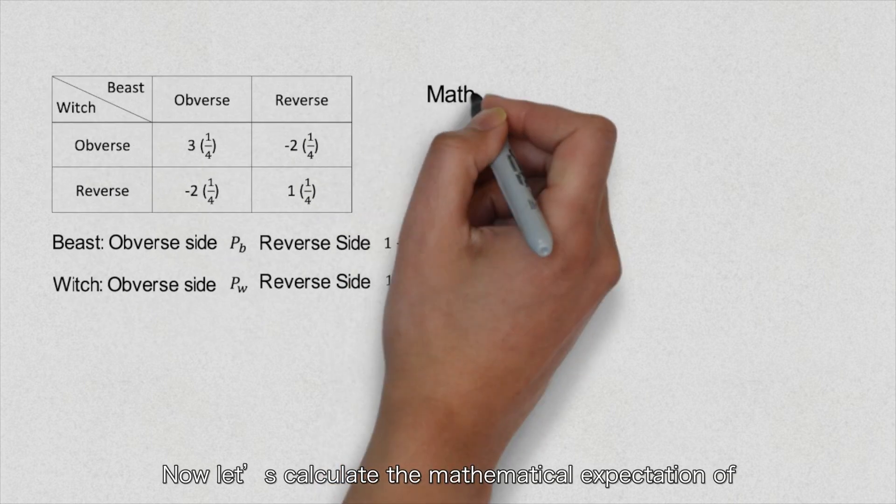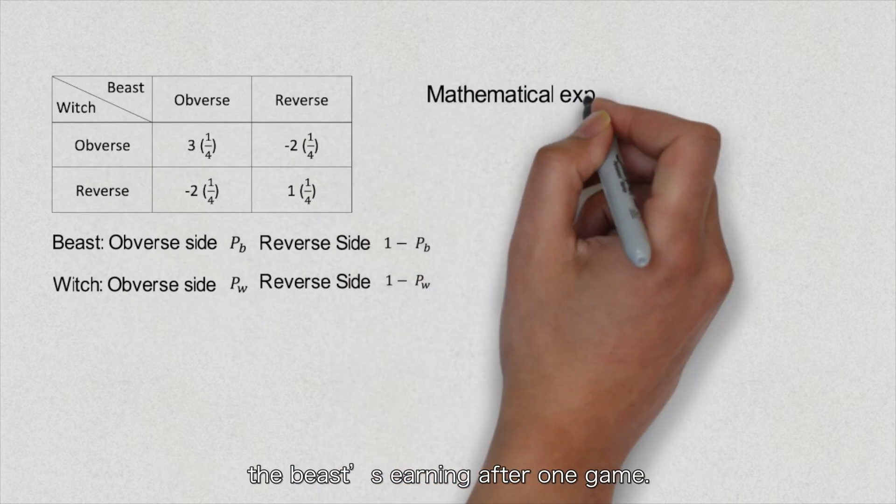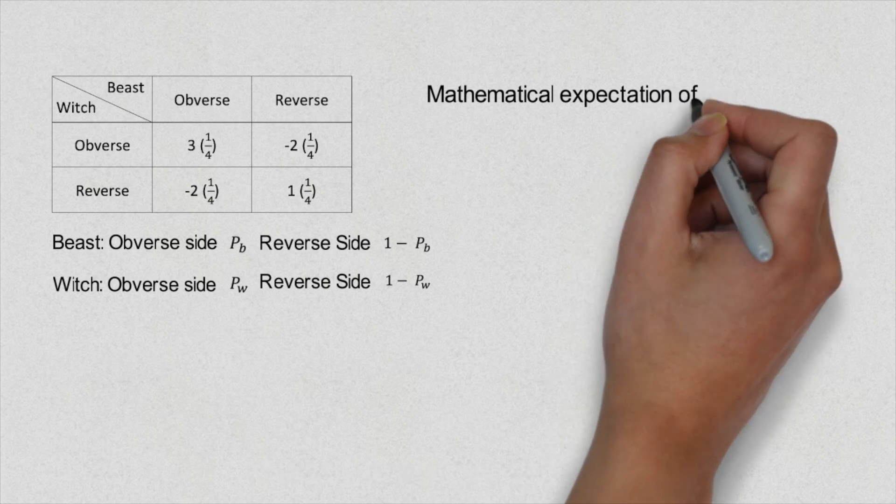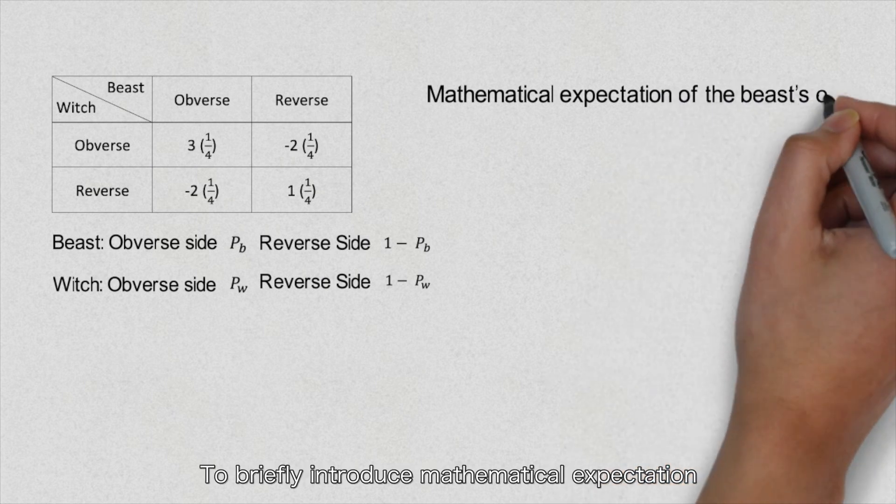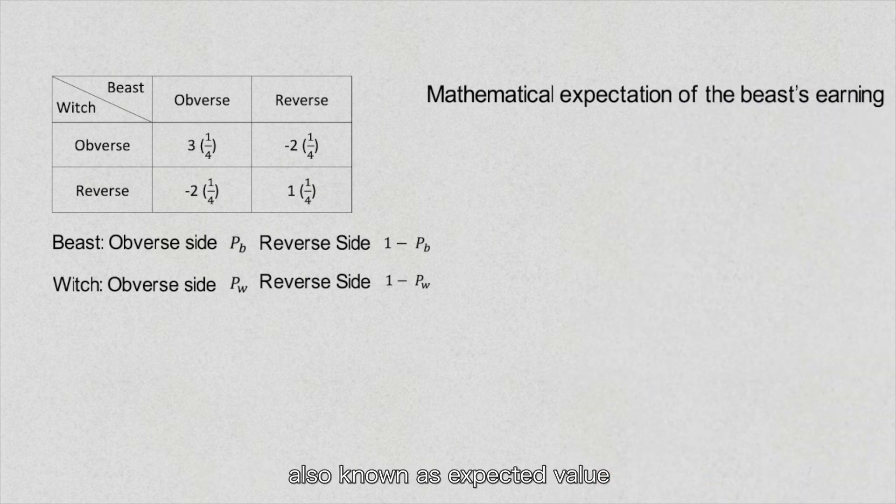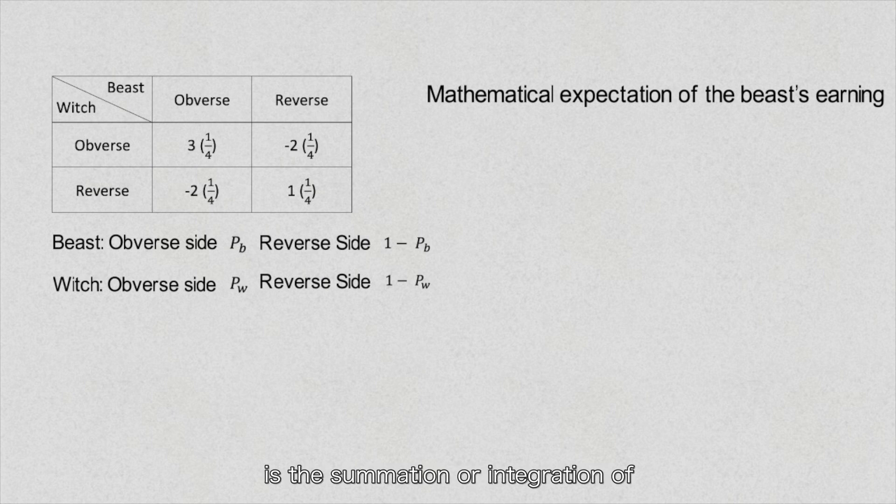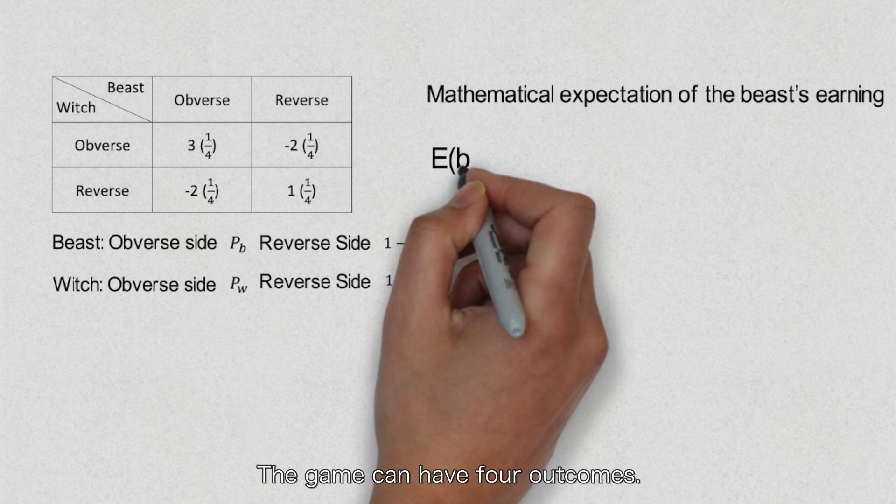Now let's calculate the mathematical expectation of the beast's earning after one game. To briefly introduce mathematical expectation, also known as expected value, it's the summation or integration of a probability value from a random number. In our game, it's equal to the amount of money the beast earns times its probability.